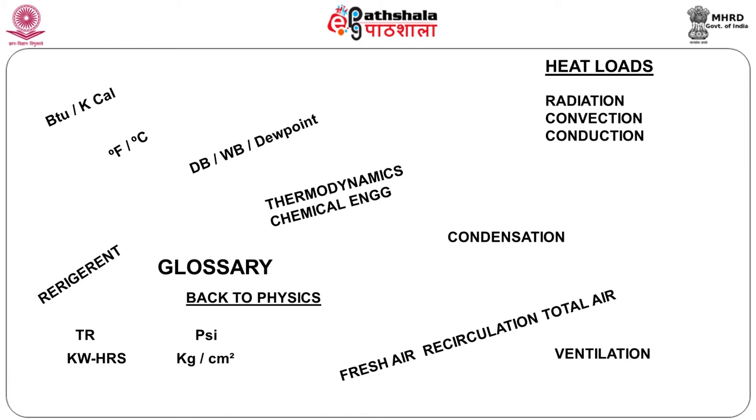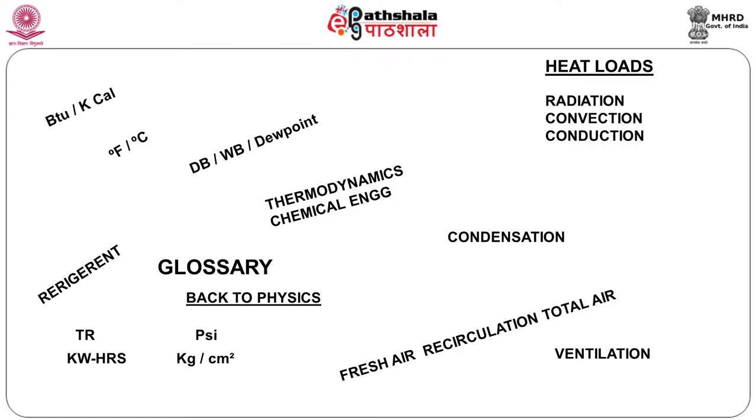In the slide in front of you, I have put in a few important items which will come up. The quantity of heat is always specified in terms of BTUs in the FPS unit or kilocalories in the SI units. The quality of heat, which you know would be the temperature, is specified in Fahrenheit in the FPS units and centigrade in SI units. A small point in favor of introducing FPS units is basically because air conditioning is strongly founded in America, and America still uses the FPS system for air conditioning work.